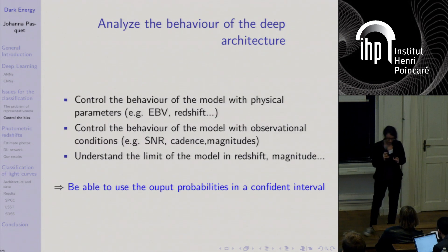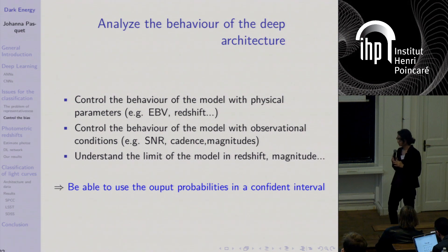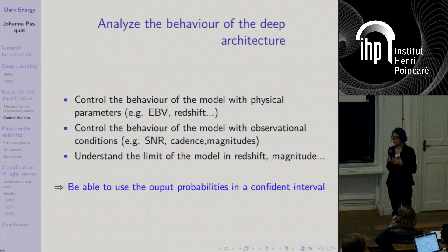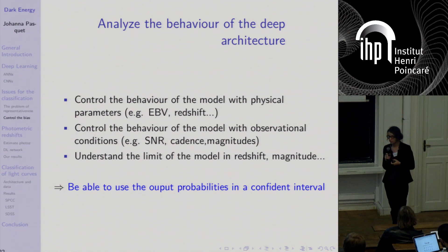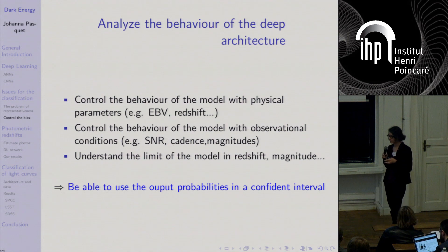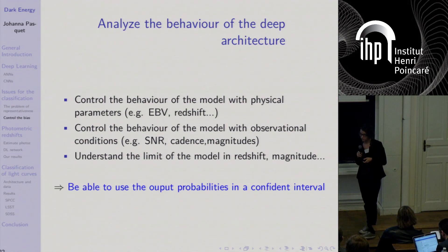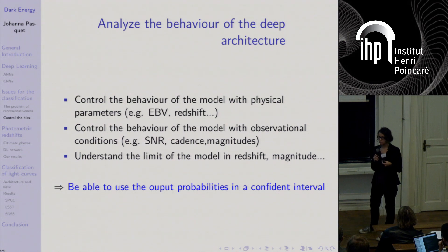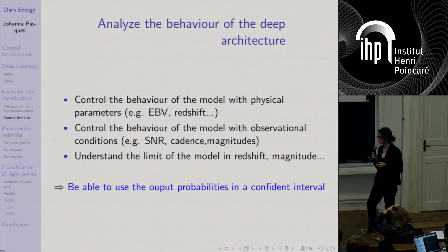Similarly, training on simulated data and testing on real data is another problem, as simulated data are often too perfect compared to real data. It is very important to analyze and understand what the algorithm gives as output, to detect different biases. When doing deep learning or machine learning we must analyze the output probabilities, verify that network behavior is not dependent on physical or observational parameters, understand the limits of the model, and consider the confident intervals usable for science.